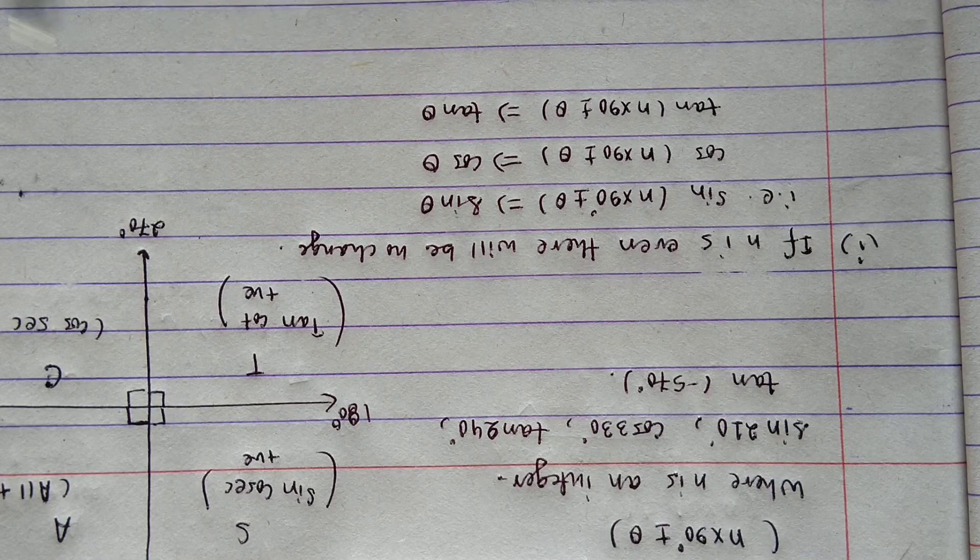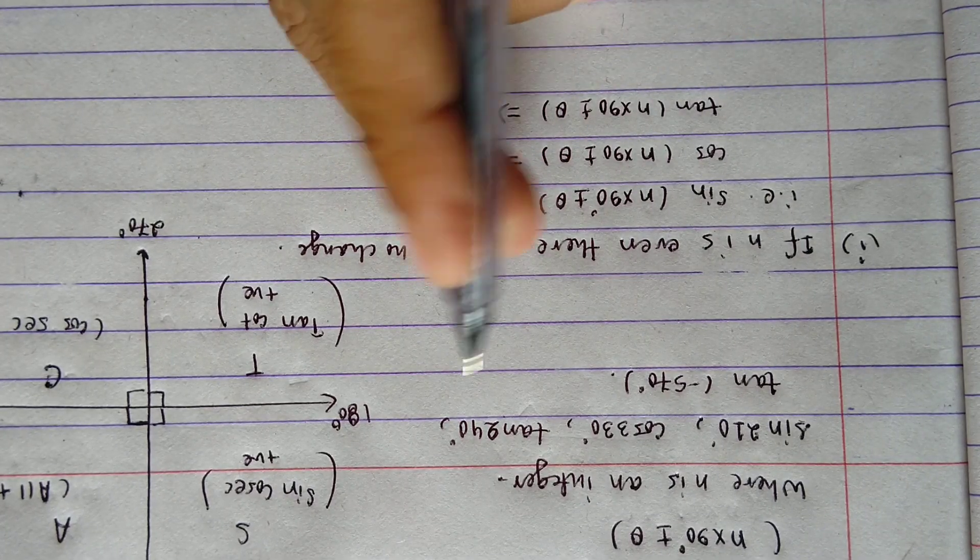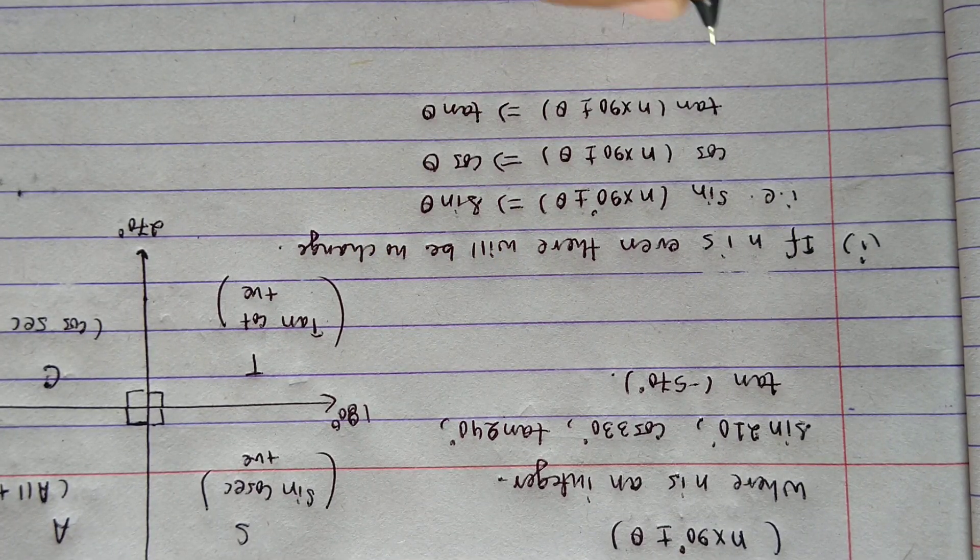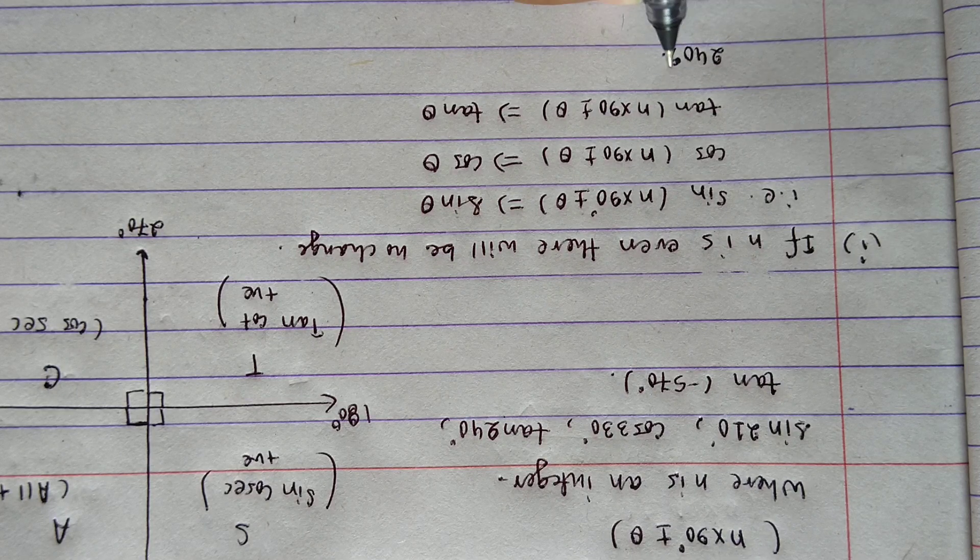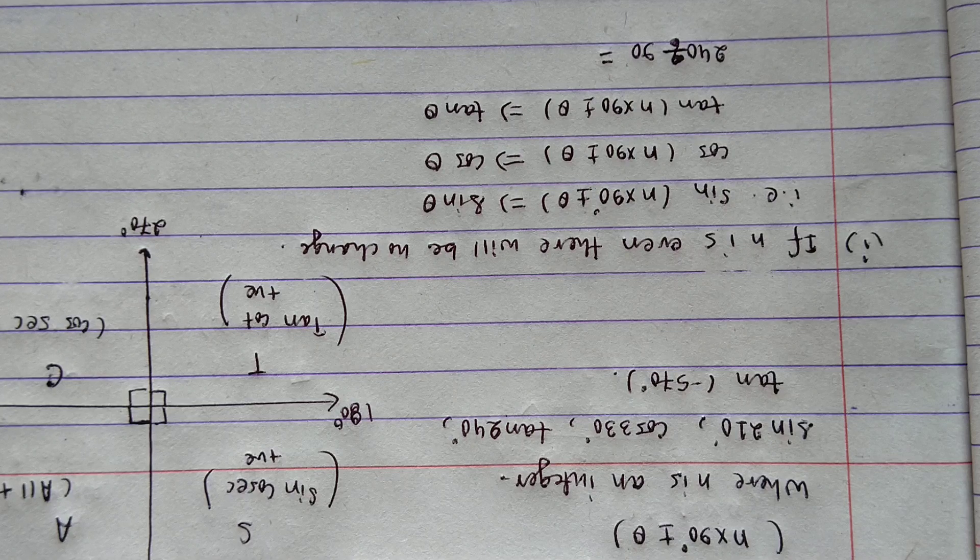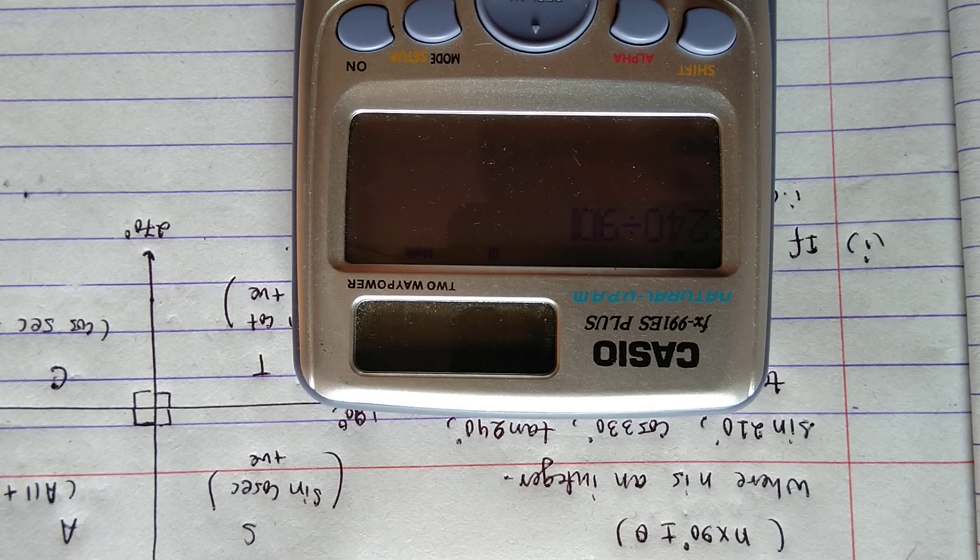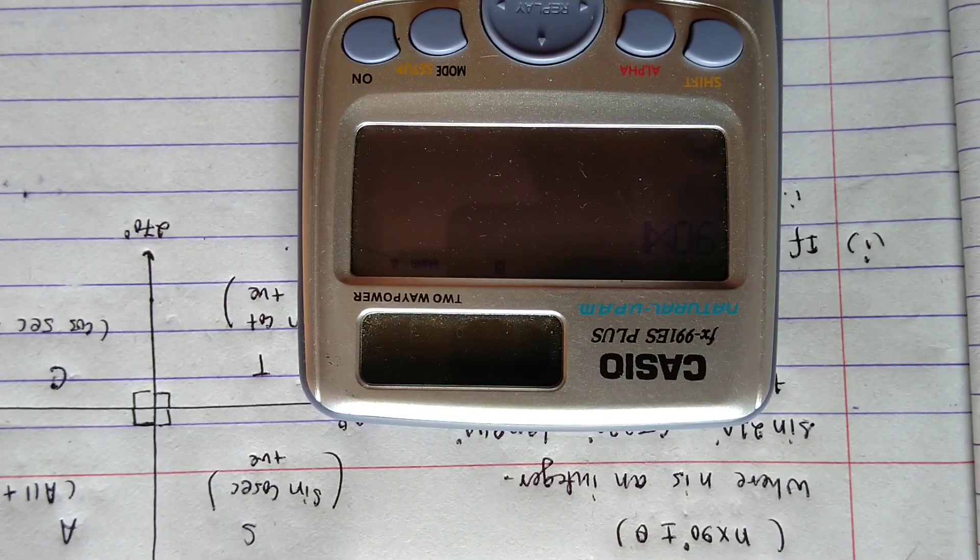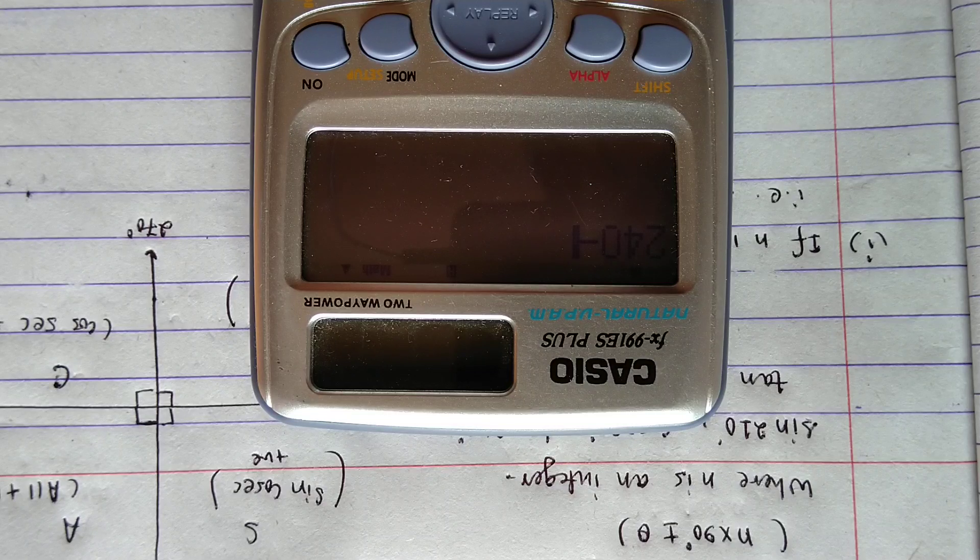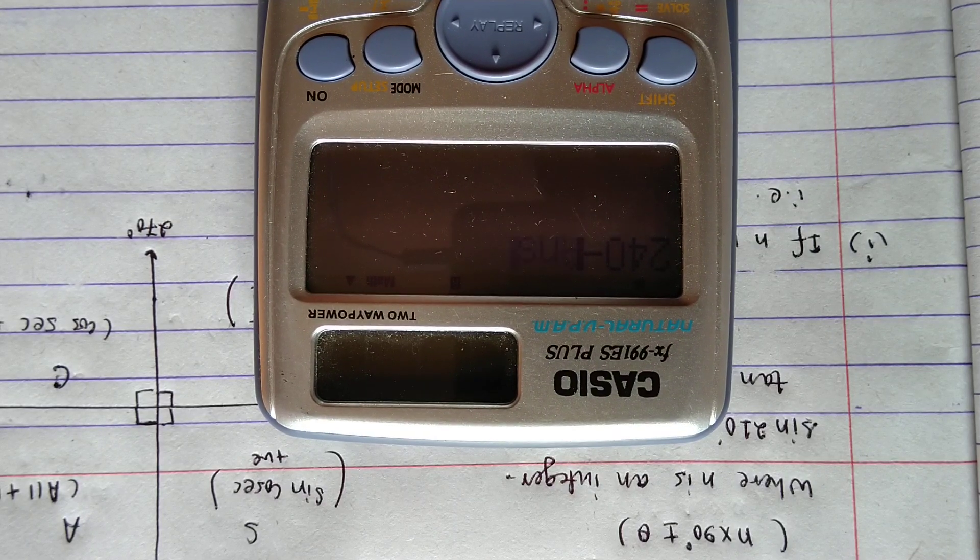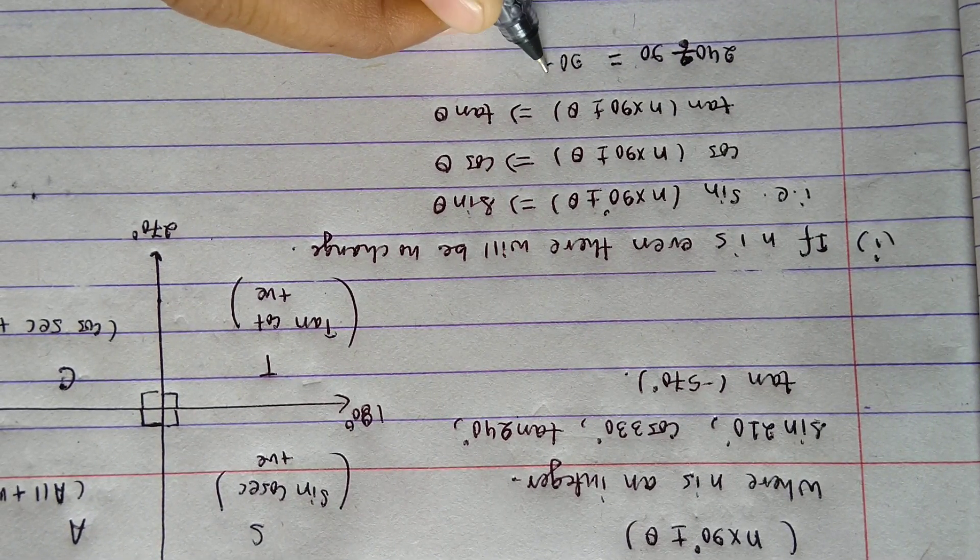We will look into this after one example. Tan 240. First divide 240 by 90. How much will you get? 240 divided by 90 is 2 point something. That means 90 into 2 becomes 180, and 240 minus 180 is 60. So tan 240 is equivalent to tan 2 into 90 plus 60.